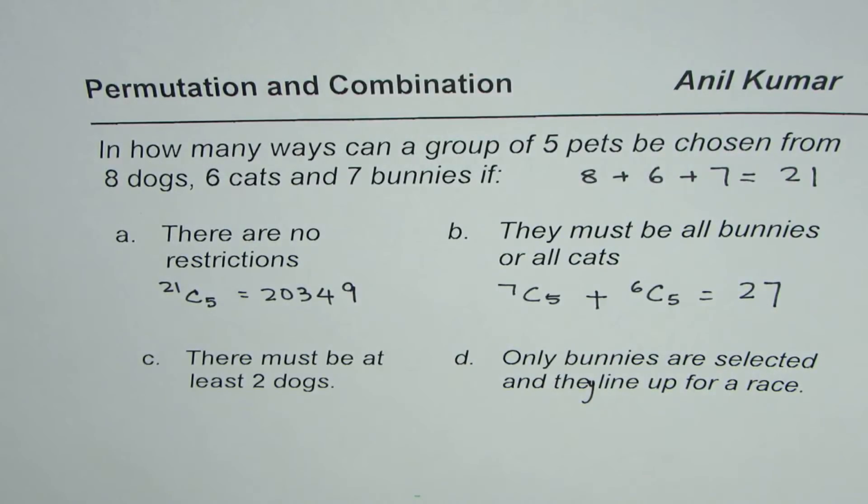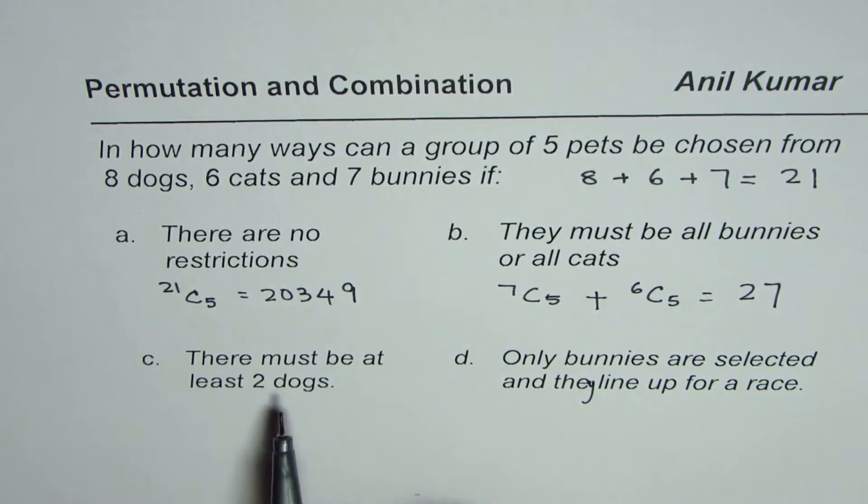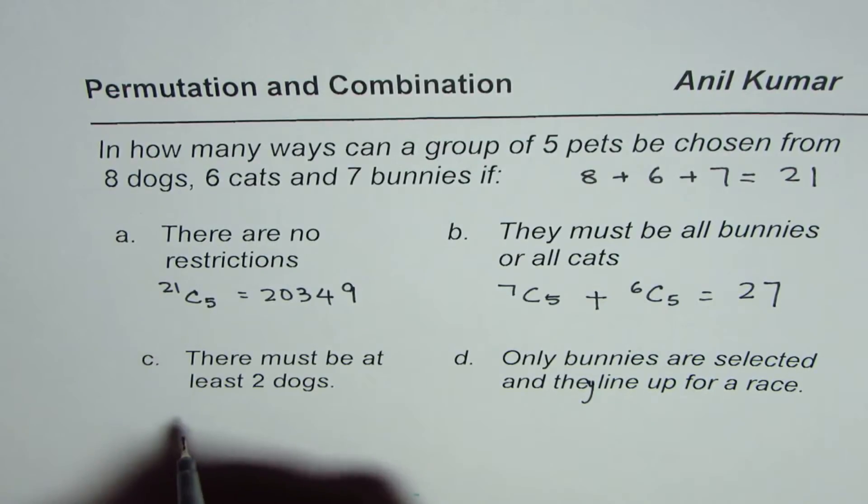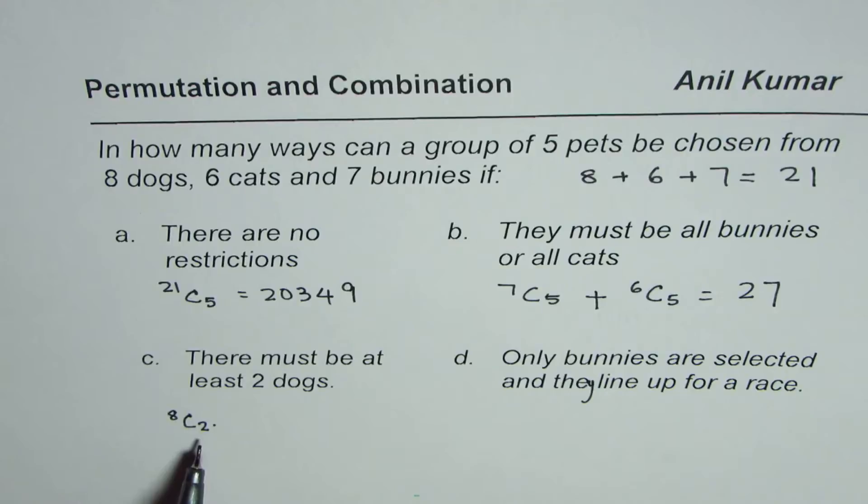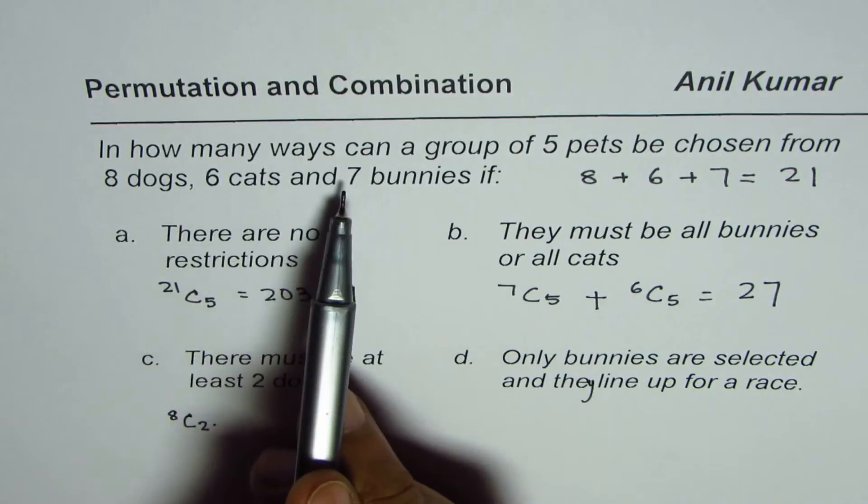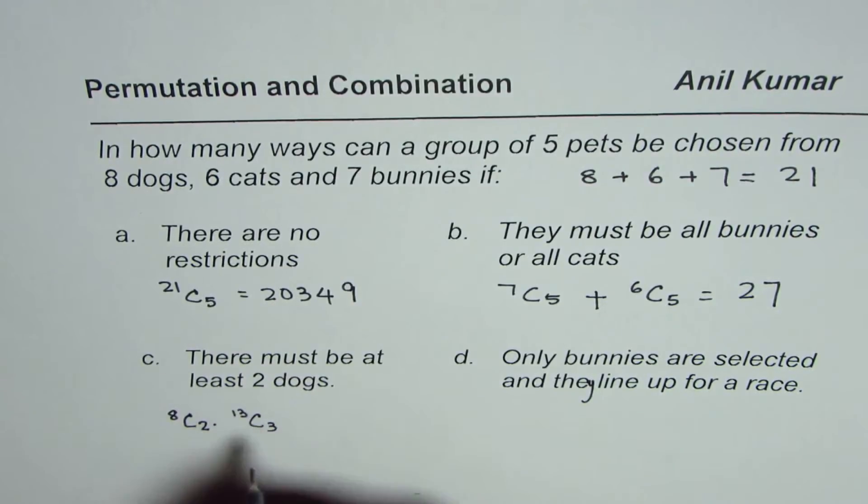Now C is there must be at least 2 dogs. That is to say, out of 5, at least 2 dogs. Now these dogs are selected from 8 dogs. So we could have from 8, we could have 2 dogs. So 8C2. Now if you select 2 dogs, you need to select from the rest 3. 6 plus 7 is 13. So from 13, you need to select 3 other pets. So that is one combination.